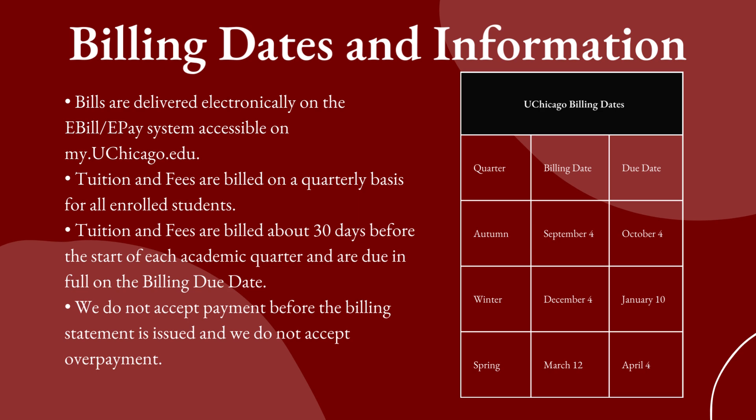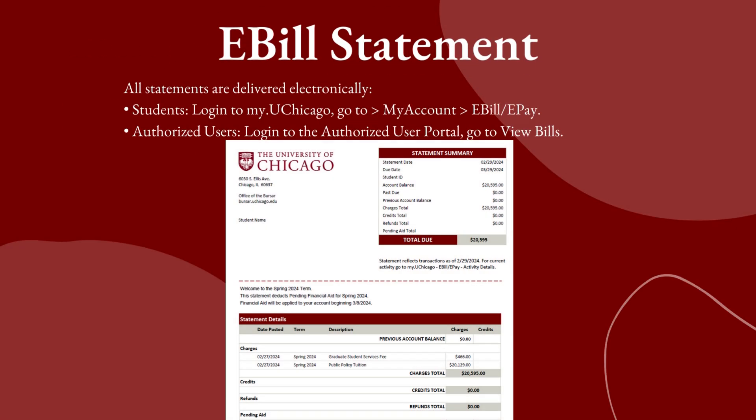All bills are delivered electronically, which you can access through your student portal. If you've created any authorized users, they too can access your student account billing information. If you have been awarded financial aid, your first bill will deduct your pending financial aid. Tuition and fees are billed about 30 days before the start of each academic quarter and are due in full at the billing due date. It is important to note that you and your authorized users can access information about your charges, credits, and payment through your student portal at any time — you do not need to wait for a bill to view this information and submit payment. The e-bill notification you and your authorized users receive will let you know when you can access a copy of your bill online.